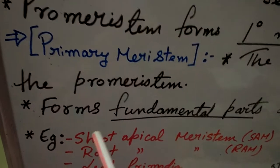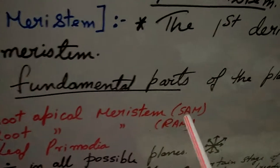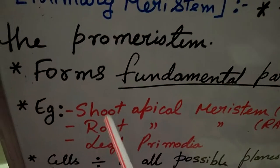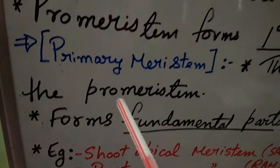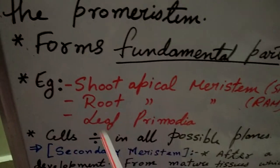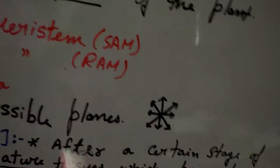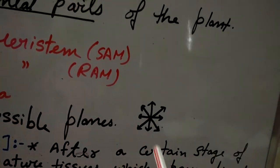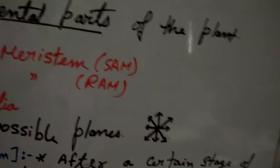Primary meristem forms the fundamental parts of the plant, which are the shoot apical meristem (SAM), root apical meristem (RAM), and leaf primordia. These three are the fundamental parts formed by the activity of primary meristem. Cells of primary meristem divide in all possible planes — the division is not restricted to one direction.